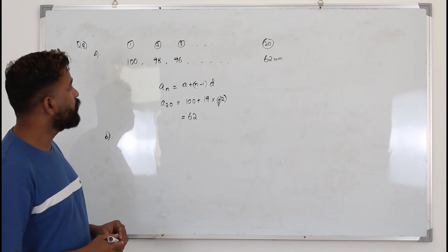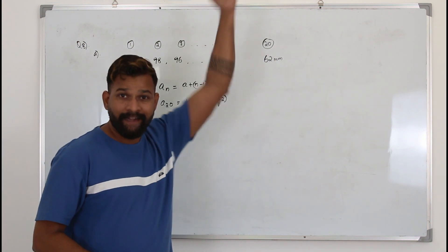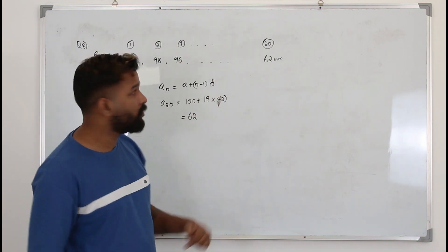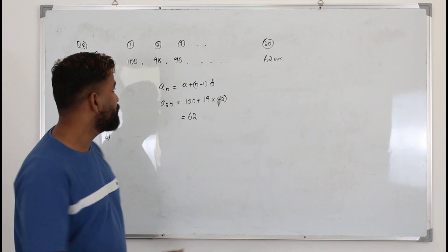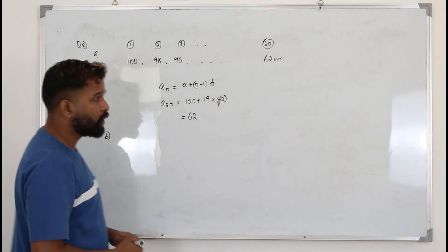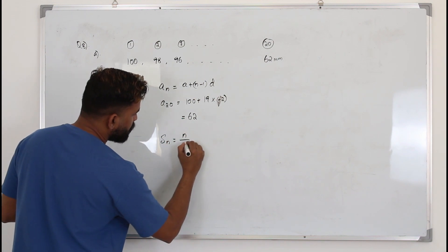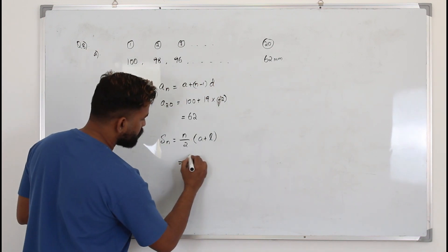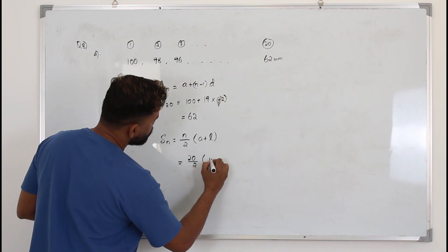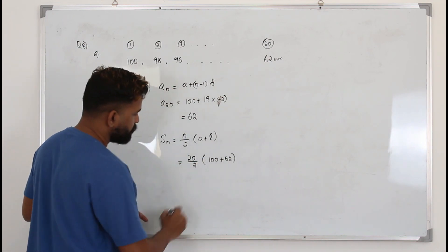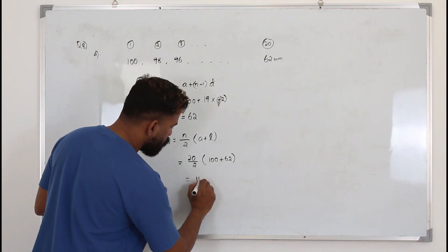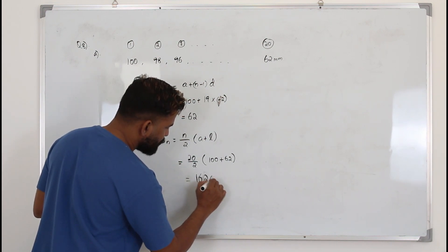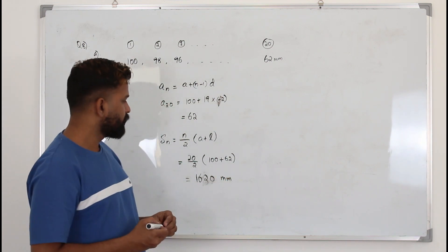Now in part B they want you to find the total depth that the post is driven into the ground after the 20th hit. The sum of this sequence is n/2 times (first term plus last term), so you get 162 times 10. That's the answer for part B.